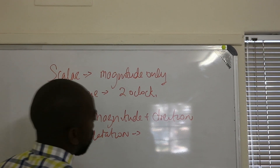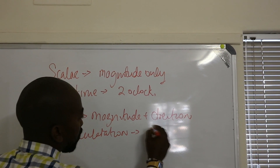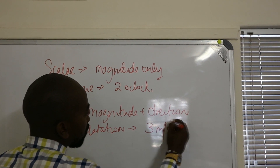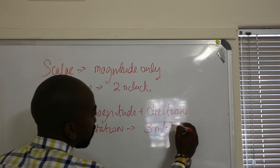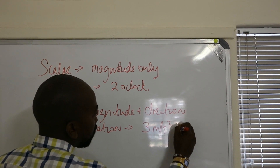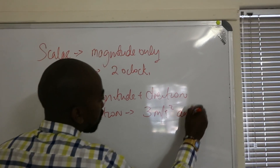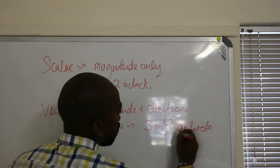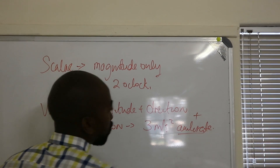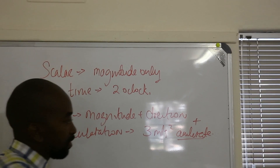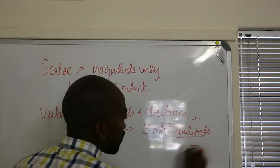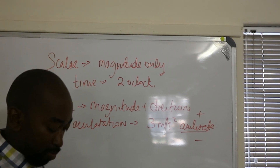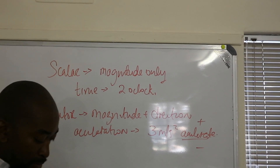When you look at an example of acceleration, you're going to say three meters per second squared — this means it's positive acceleration. If it's a deceleration, it's going to be negative.